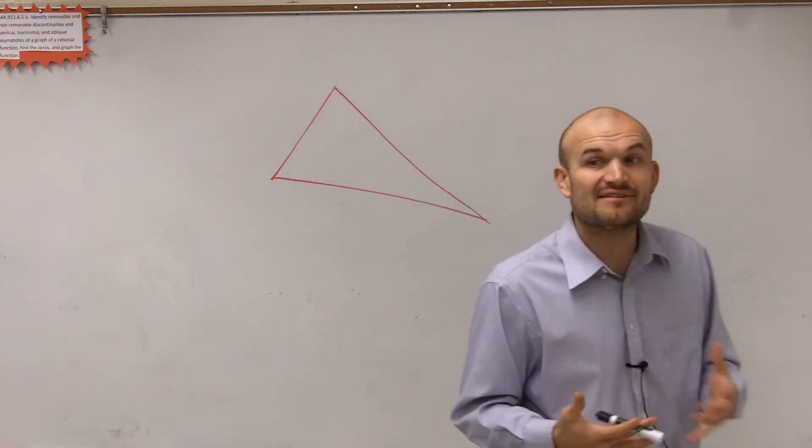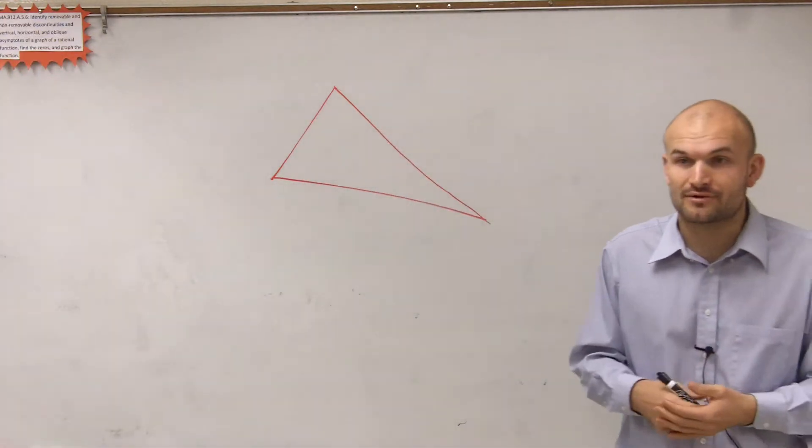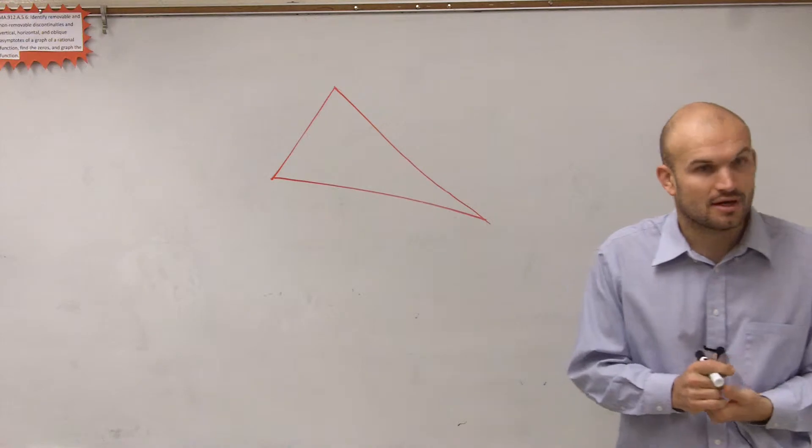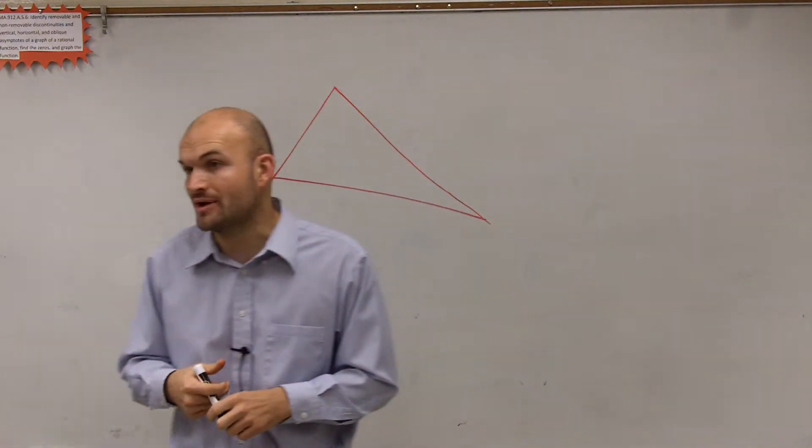So what we're going to do today is we're going to investigate now not right triangles, but oblique triangles. Triangles that are not, or could contain a right angle.